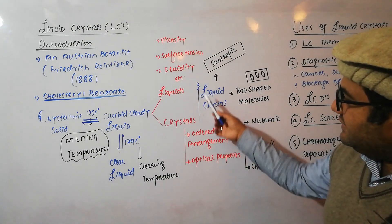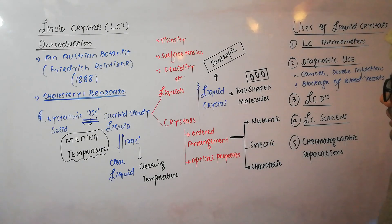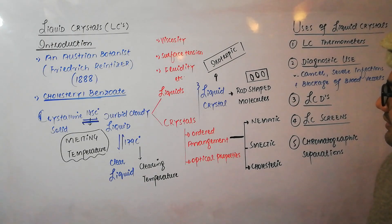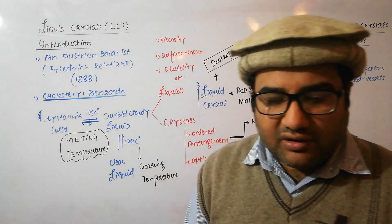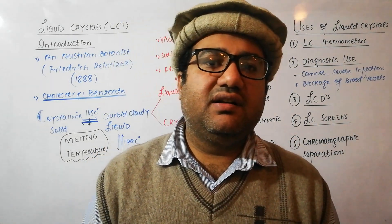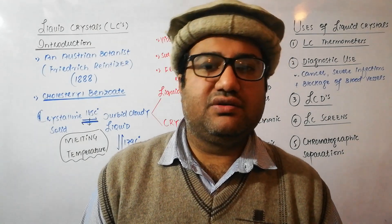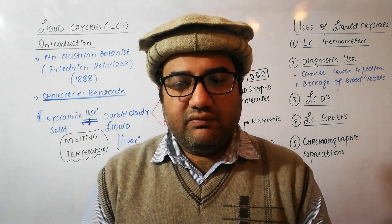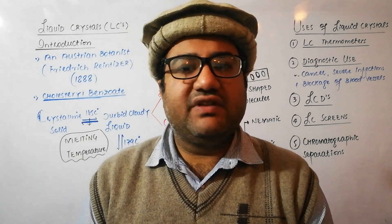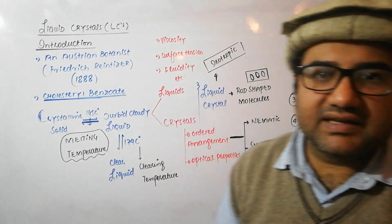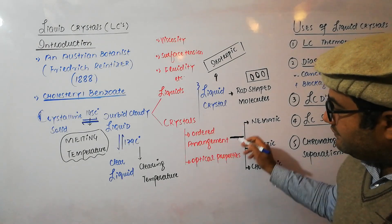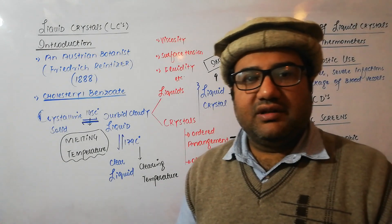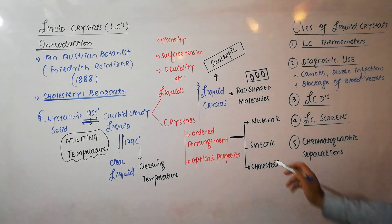Liquid crystals usually have elongated rod-shaped molecules. Liquid crystals are always isotropic, meaning that their physical properties do not change with direction — if you study them in different directions, the physical properties remain the same. On the basis of the type of ordering, there are three types of liquid crystals.